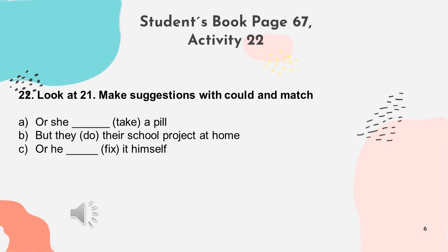For example, we have letters A, B, and C — suggestions for activity 21. The number three of activity 21 is about Susan, who has a bad toothache. 'Should she go to the dentist?' — 'Yes, she should.' But another option can be: 'Or she could take a pill.'